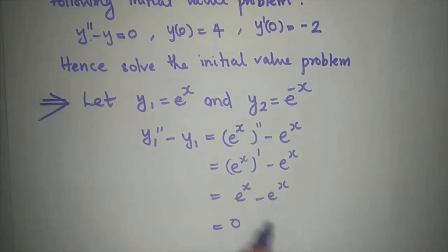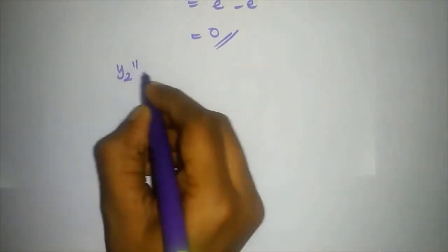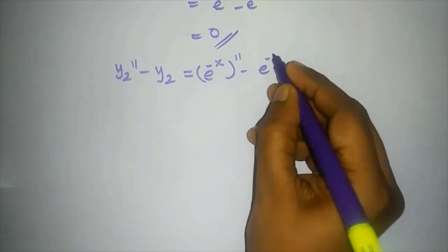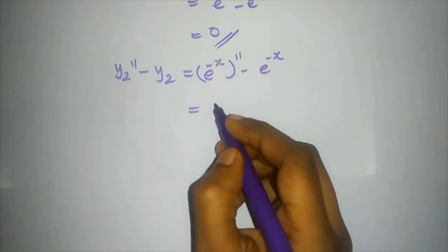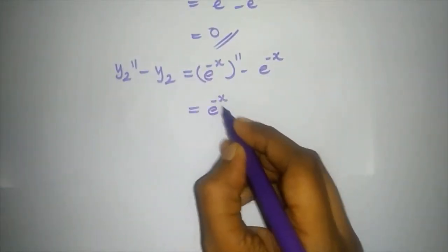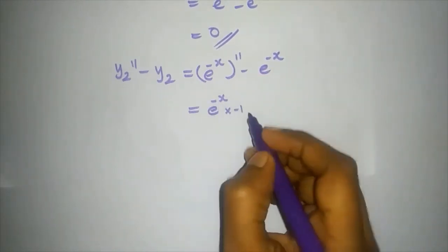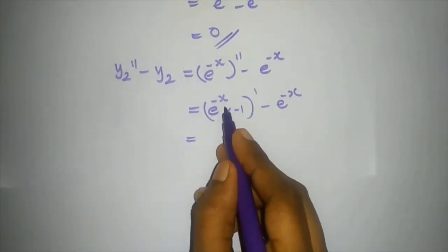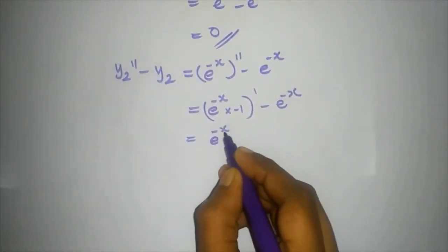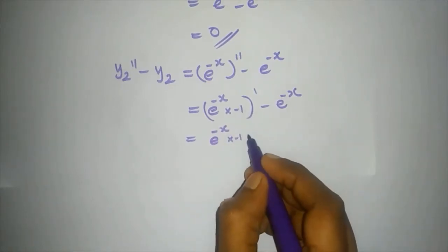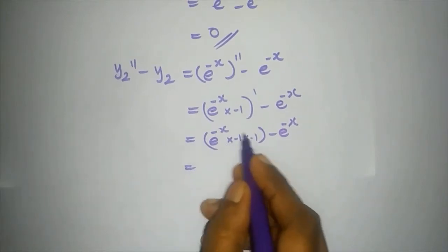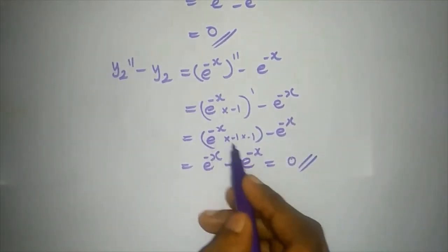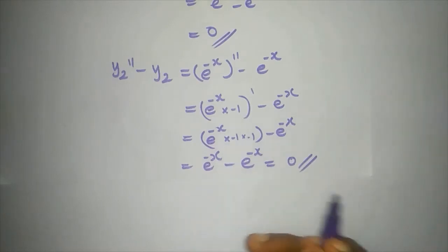Now for y2 = e^(-x): y2'' minus y2. The derivative of e^(-x) is e^(-x) times the coefficient minus 1. Then the second derivative: the derivative of minus e^(-x) is minus e^(-x) times minus 1, which gives e^(-x). So y2'' minus y2 equals e^(-x) minus e^(-x), which equals 0. Hence y1 and y2 both satisfy the equation.